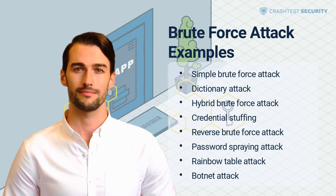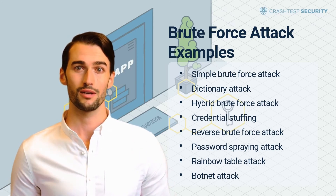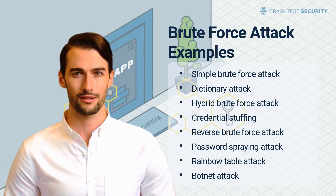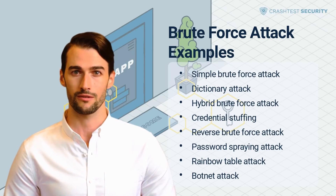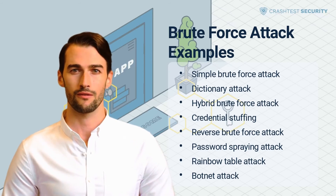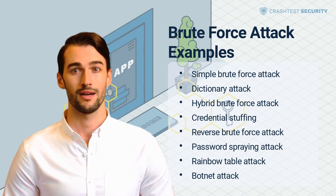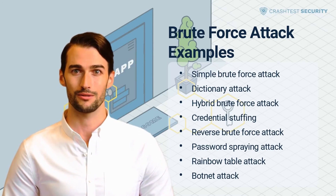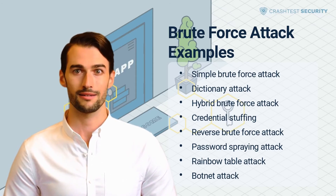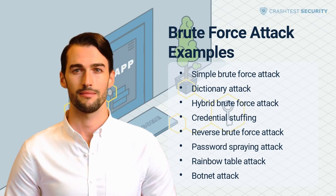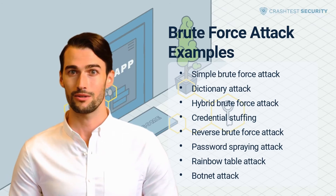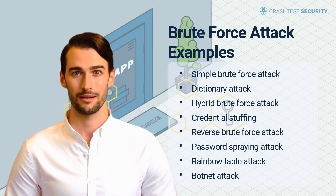Credential stuffing tests a known, stolen, or leaked combination of username and password from one website on many other websites. It is based on the logic that people sometimes reuse their usernames and passwords. Reverse brute force attack: typically, attackers start by knowing usernames and trying to guess passwords. In a reverse brute force attack, attackers know passwords and try out different combinations of usernames or account numbers. Password spraying attack: this approach is utilized when account lockout policies are in place and attackers are limited in the number of attempts they can make. Instead of trying many different combinations of passwords, they will take one password known to be commonly used and try it out on many other accounts.